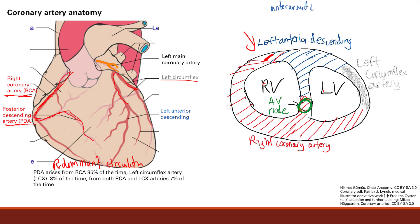It supplies the anterior surface of the left ventricle. It does two-thirds of the interventricular septum, as you can see here. And the other thing it does is supply the anterolateral papillary muscle.